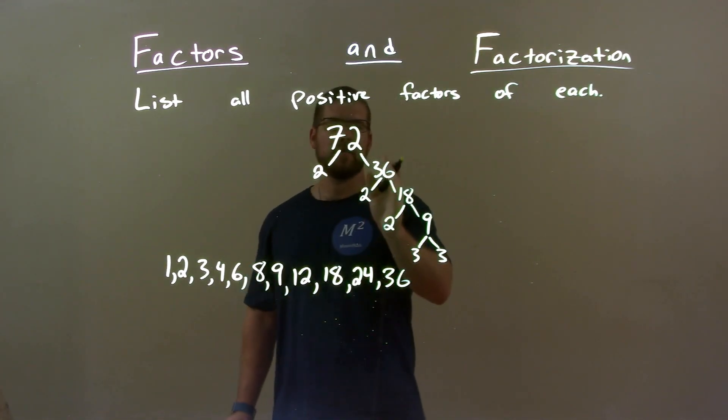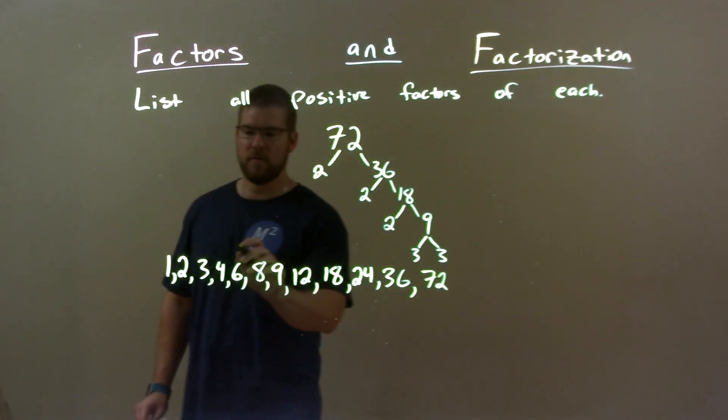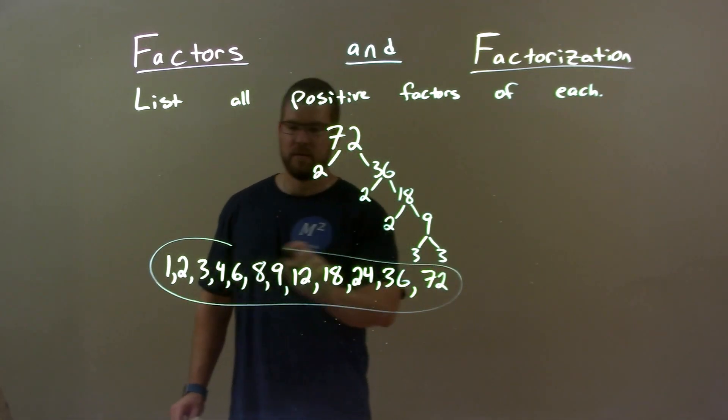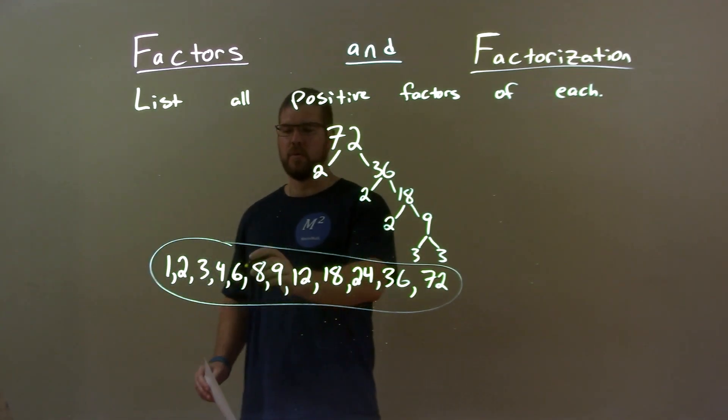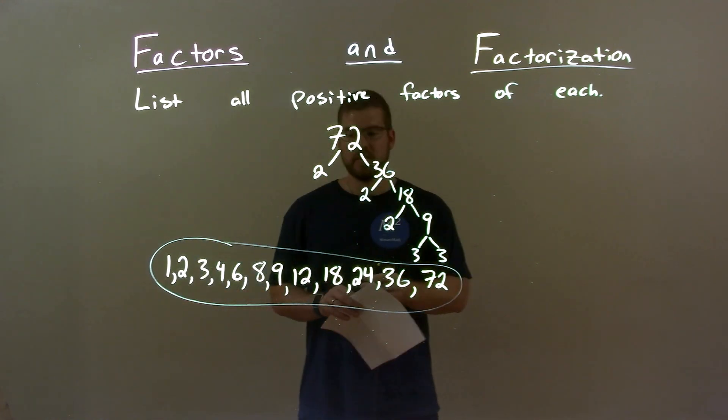And then now we're halfway. Since we're halfway, we're kind of done until 72 itself. So my final answer here is just 1, 2, 3, 4, 6, 8, 9, 12, 18, 24, 36, and 72.